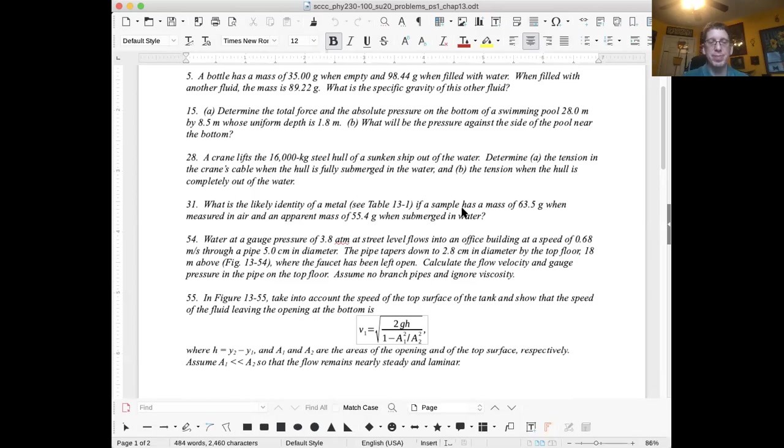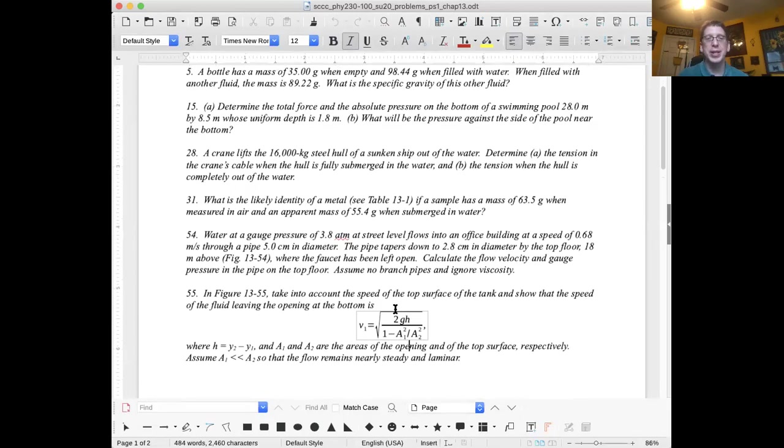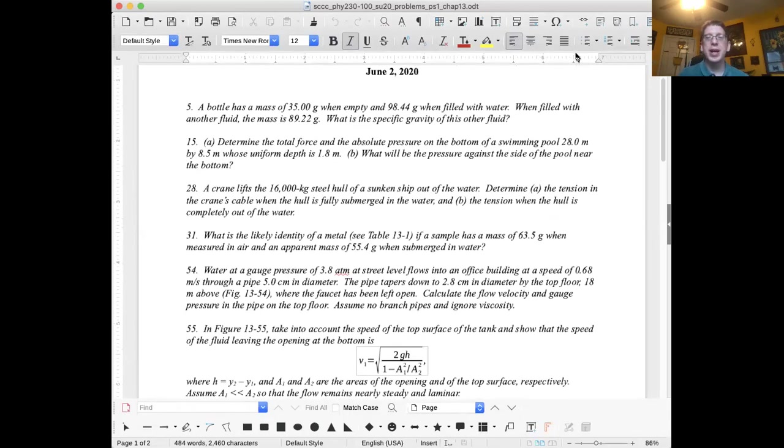For the last problem, which is figure 13.5, problem 55. In figure 13-55, take into account the speed of the top surface of the tank and show that the speed of the fluid leaving the opening in the bottom is related to the ratio of A1 and A2, the areas of the opening and of the top surface. H is Y2 minus Y1. This I will diagram out for you so you can see it.